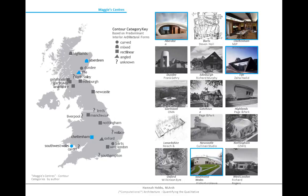This study tested buildings designed by internationally acclaimed architects who were all given the same exact architectural brief, program, and scale, but different sites. These buildings are called Maggie's Cancer Care Centers, located around the United Kingdom. There were 15 at the time of the study, and as you can see, each Maggie's center varies drastically in form. After reviewing the 15 centers, four contour categories emerged: curved, a mix of curves and right angles, right angles, and acute angles. The map on the left shows the location of Maggie's centers around the United Kingdom, labeled by contour category.